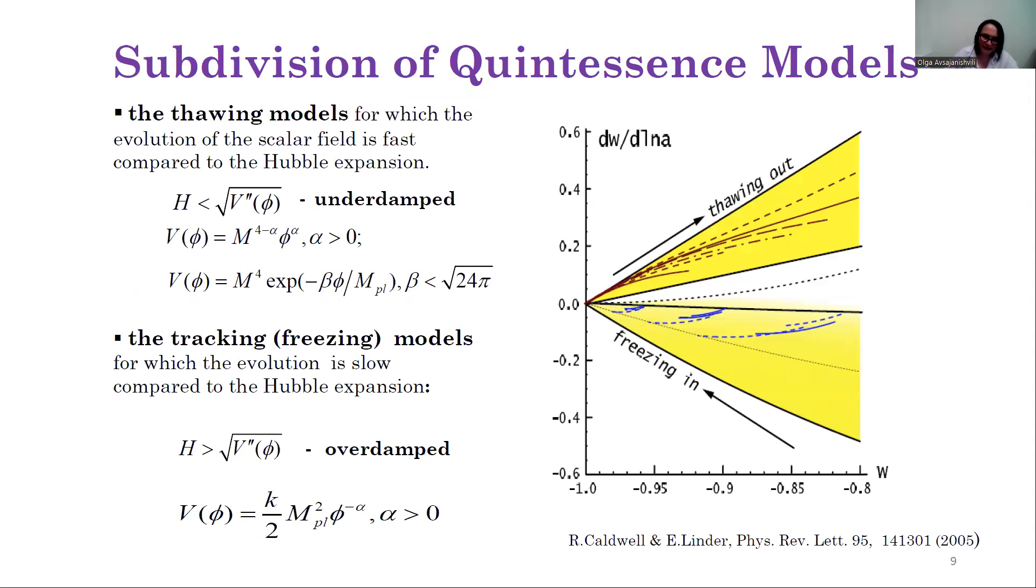Quintessence models are subdivided into thawing models, for which the evolution of the scalar field is fast, and tracking models, for which the evolution of the scalar field is slow compared to the Hubble expansion.